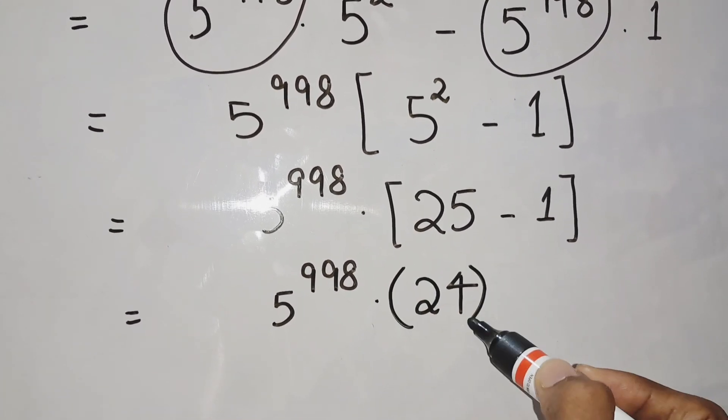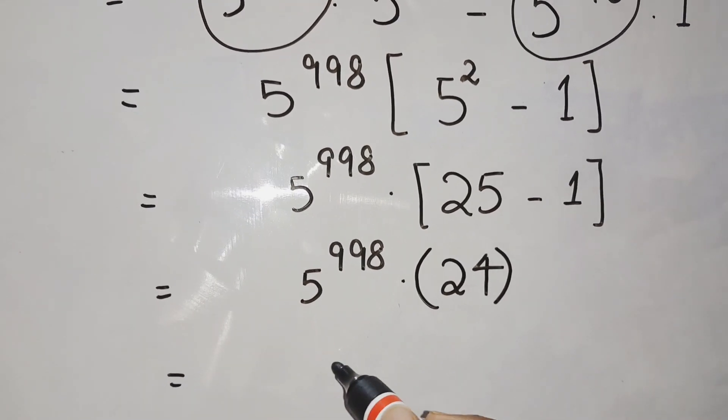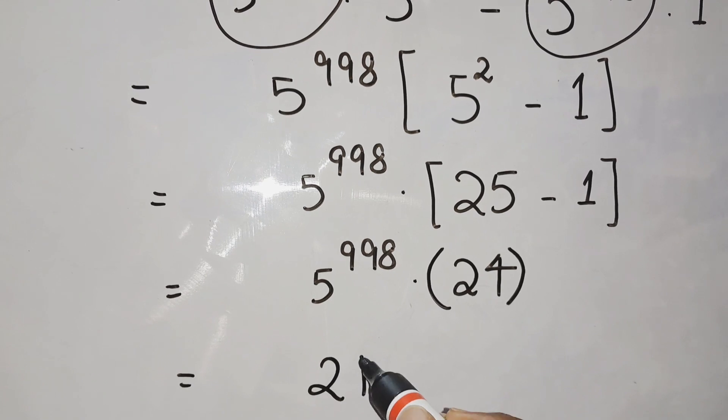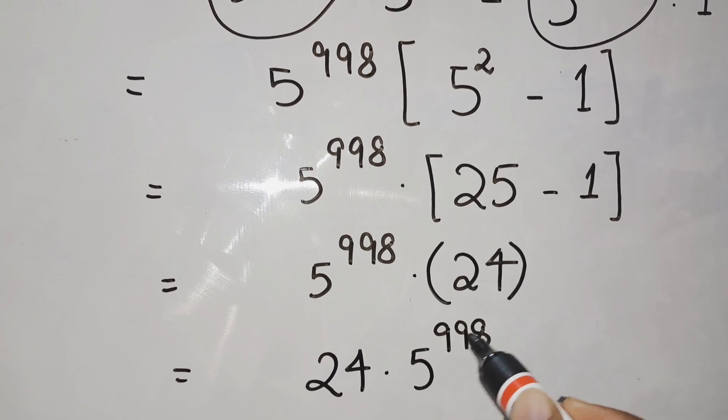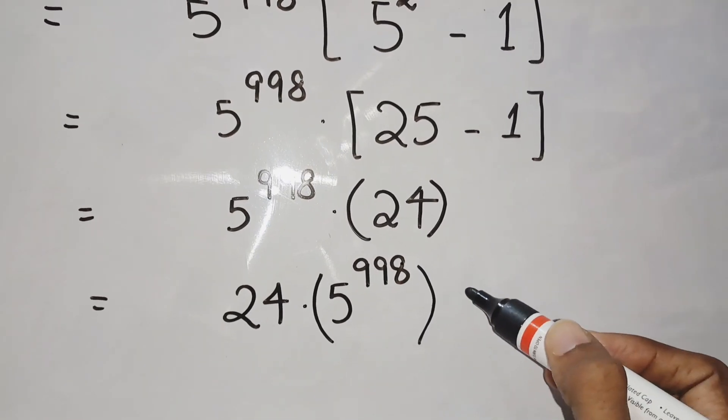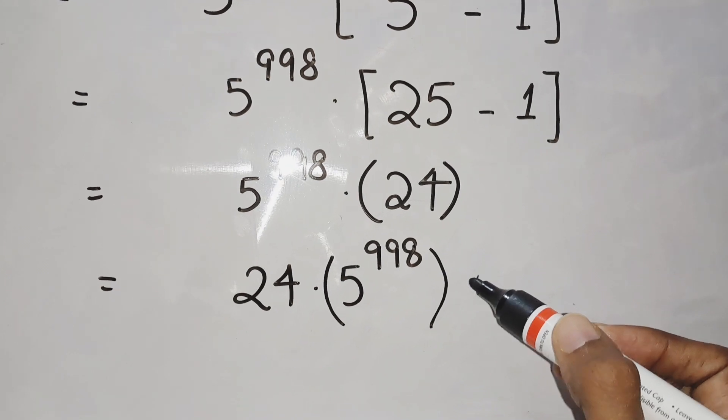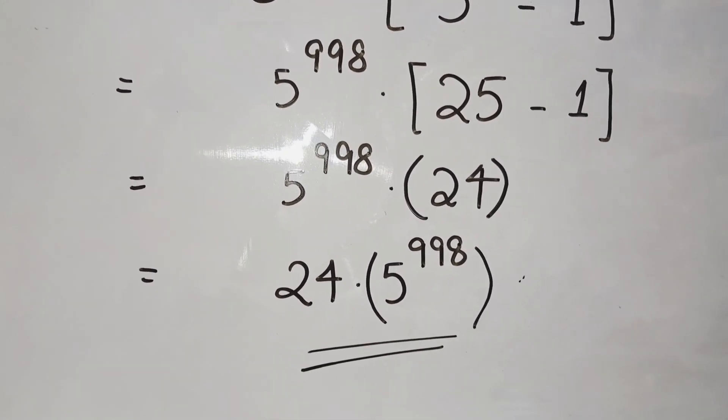24 into 5 to the power 998, which is our final answer. So this is our final answer: 24 into 5 to the power 998.